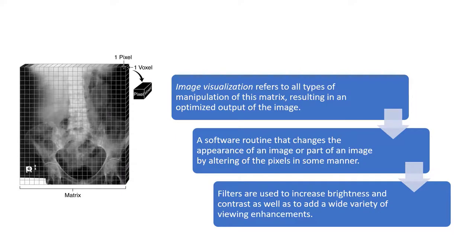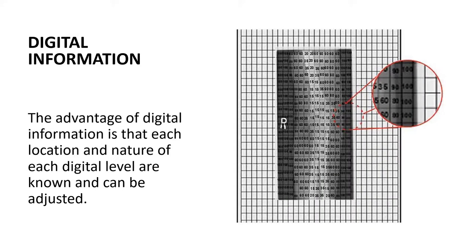Image visualization refers to all types of manipulation of the intensities on the matrix resulting in an optimized output of the image. The advantage of digital information is that each location and nature of each digital level are known and can be adjusted by the operator.